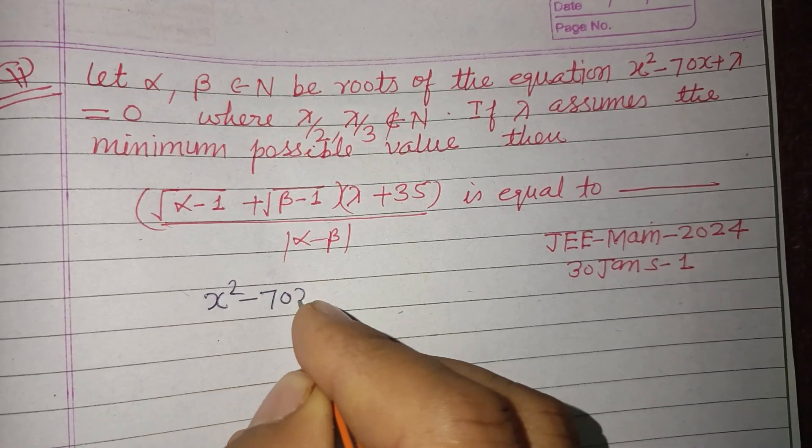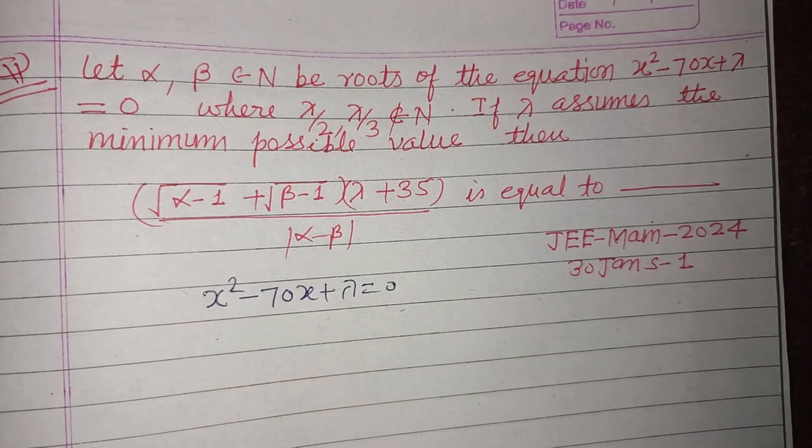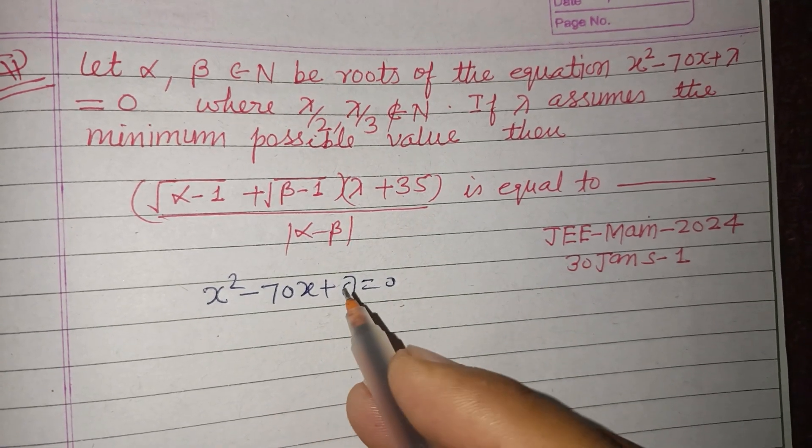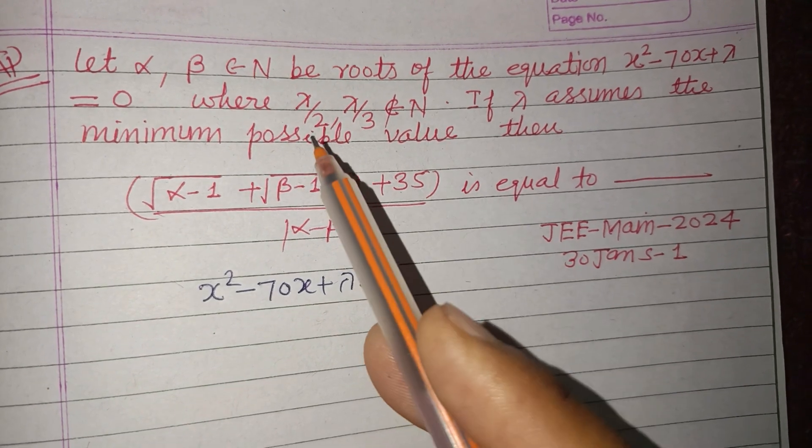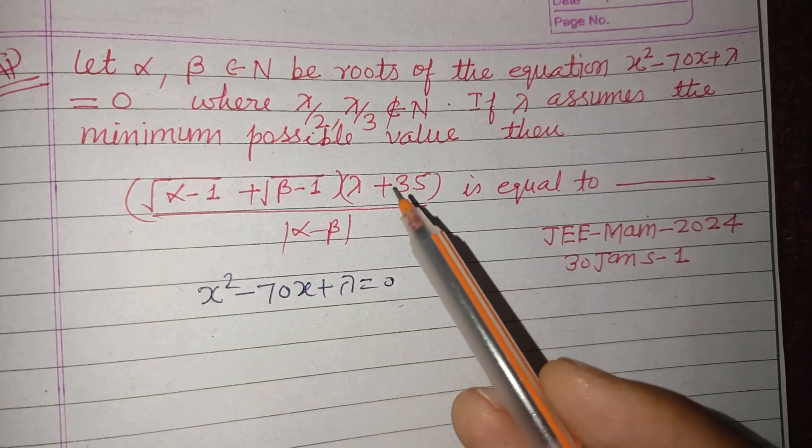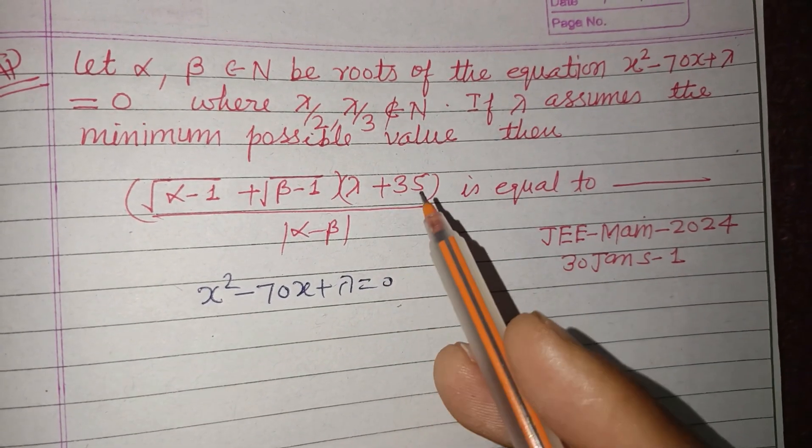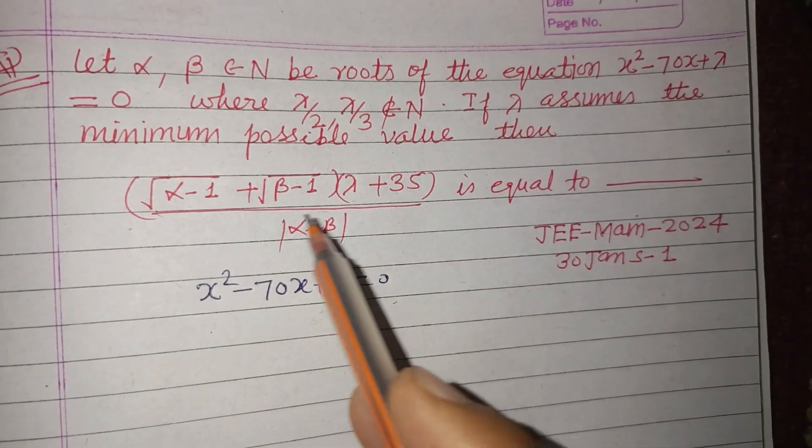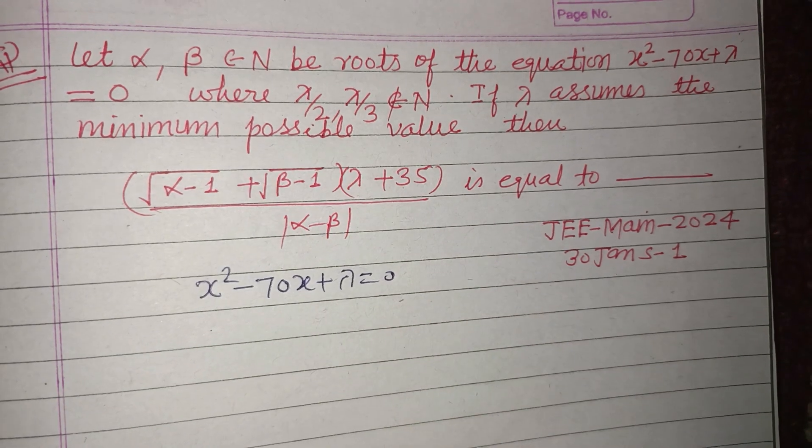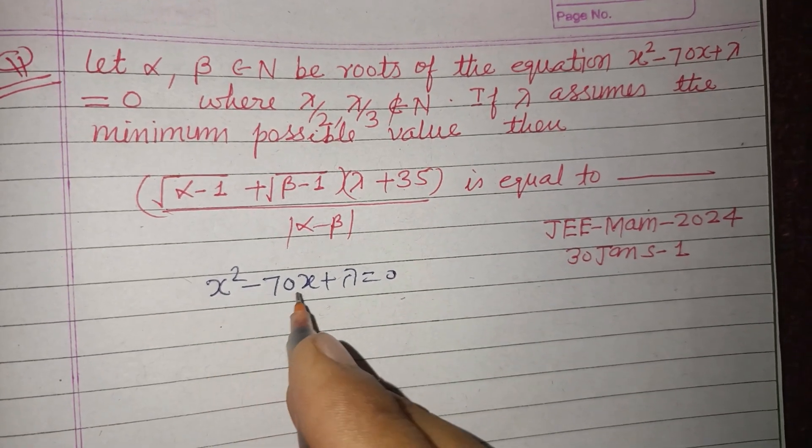The equation is x² - 70x + λ = 0, where λ/2 and λ/3 do not belong to natural numbers. It means when we divide λ by 2 or 3, it does not give any integer or natural number. If λ assumes the minimum possible value, then find the expression equal to.